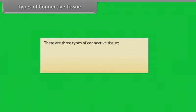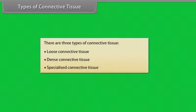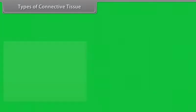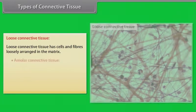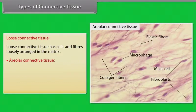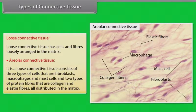There are three types of connective tissue: loose connective tissue, dense connective tissue, and specialized connective tissue. Loose connective tissue has cells and fibers loosely arranged in the matrix. Areolar connective tissue consists of three types of cells — fibroblasts, macrophages, and mast cells — and two types of protein fibers, collagen and elastin fibers, all distributed in the matrix.